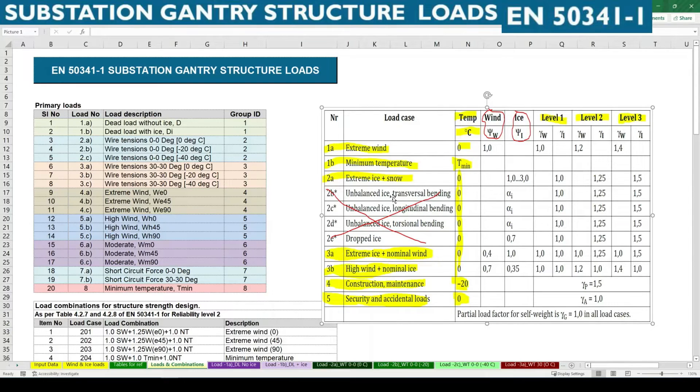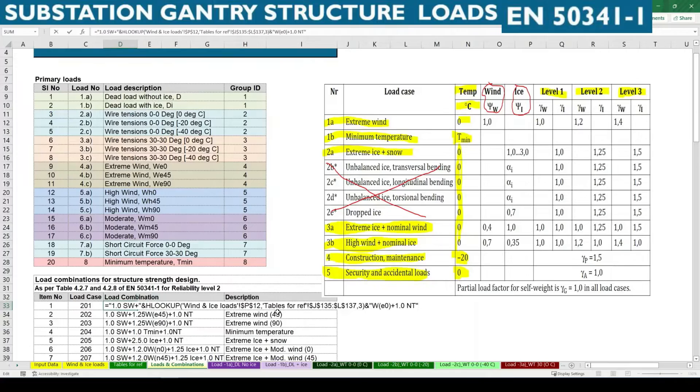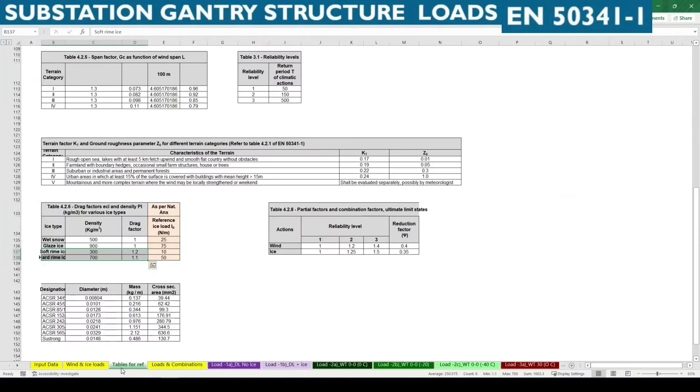For this criteria for gantry structure this may not be applicable to most of these substation gantries. So for first one here it is extreme wind, for that for reliability level 2 we need to consider 1.2. So then our table need to update here.